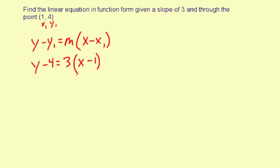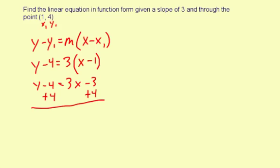This is an answer in point-slope form, but the question asks for function form, so we need to distribute the 3. It becomes y minus 4 equals 3x, and 3 times negative 1 is negative 3. Then add 4 to both sides to isolate y, giving y equals 3x plus 1.